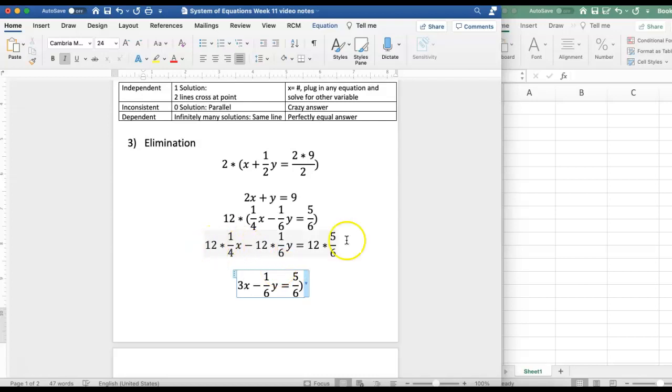Now 12 times 1/6 I can think of 12 divided by 6 which is just 2 and then the last one again 12 divided by 6 is 2 and I have 5 over 2 and 2 times 5 which is 10.